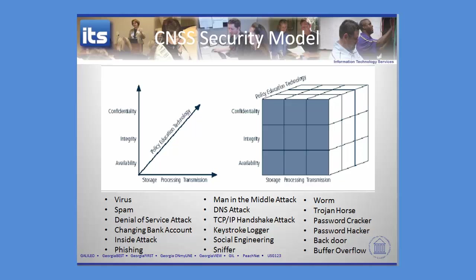A denial of service attack is one where you're constantly consuming a resource — be it processing, storage, or transmission — and as a result, you're taking a particular site, computer, or processor offline so that it can't do its intended task. So it's not an attack against confidentiality or integrity; it's an attack against availability.